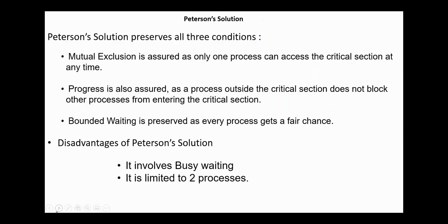Peterson solution preserves all three conditions. Mutual exclusion is assured as only one process can access the critical section at any time. Progress is also assured as a process outside the critical section does not block other processes from entering. Bounded waiting is preserved as each process gets a fair chance. However, Peterson solution has two disadvantages: it involves busy waiting, and it is limited to two processes.